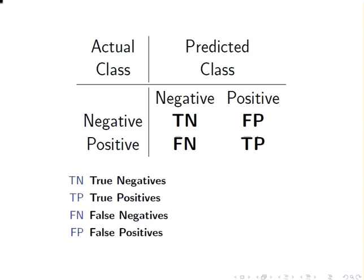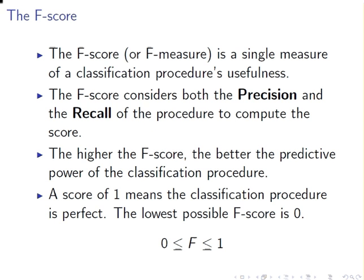So we would set up our data like this. This is a classification table, sometimes referred to as a confusion matrix or something similar to a confusion matrix. We have the actual cases set up along the rows and the predicted cases set up along the columns.